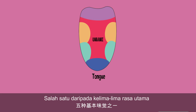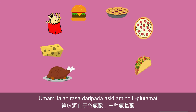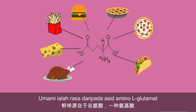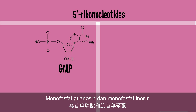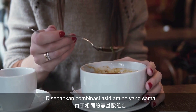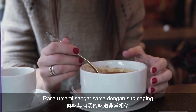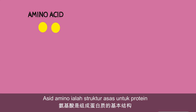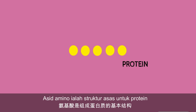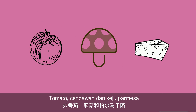Umami is one of the five core tastes, including sweet, sour, bitter, and salty. Essentially, umami is the taste of the amino acid L-glutamate and ribonucleotides such as guanosine monophosphate (GMP) and inosine monophosphate (IMP). Due to a similar amino acid combination, umami taste is very similar to meat broth. Amino acids are the basic building blocks of protein and occur in many foods like tomatoes, mushrooms, and Parmesan cheese.